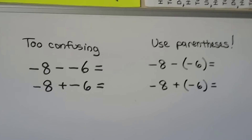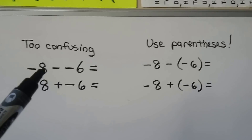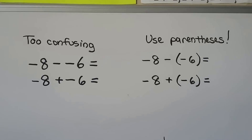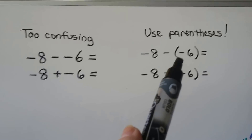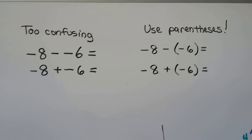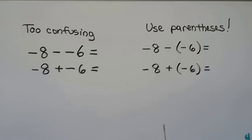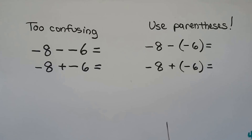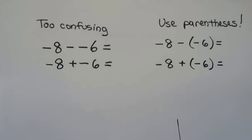I want to make sure you understand that we're going to use parentheses. If we have a negative 8 minus a negative 6, this is too confusing on the eyes. So it's a lot easier to put this into parentheses so that we can see it. If we have a plus and a minus next to each other, that's going to be really confusing, so we put that into parentheses. We could actually put them both into parentheses and that would be okay.